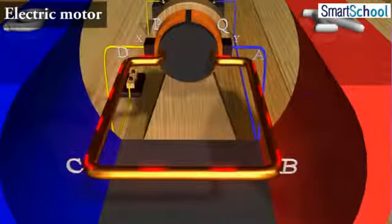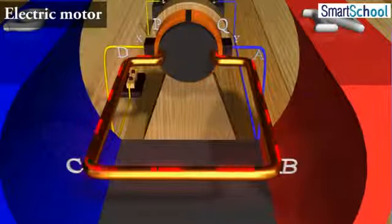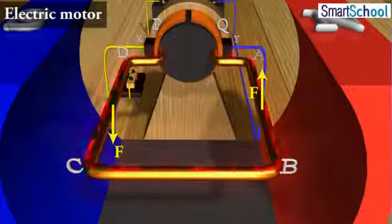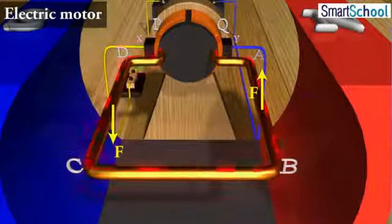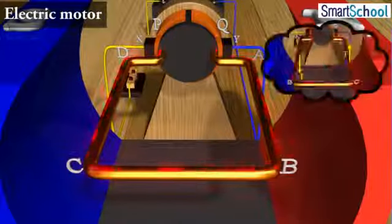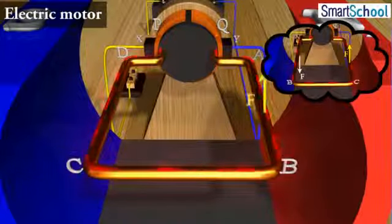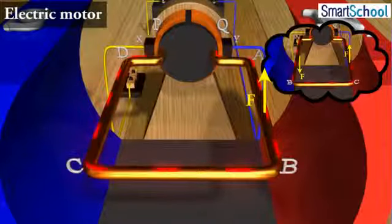The reversal of current also reverses the direction of force acting on the two arms AB and CD. Thus, the arm AB of the coil that was earlier pushed down is now pushed up and the arm CD previously pushed up is now pushed down.